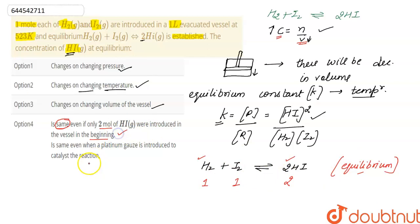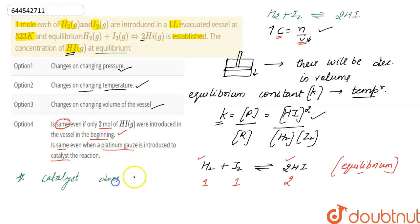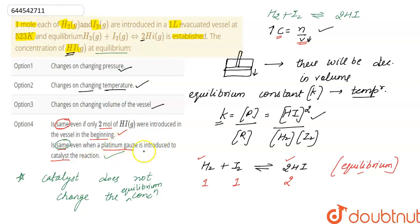Next: is the concentration of HI the same even when a platinum catalyst is introduced to catalyze the reaction? A catalyst does not change the equilibrium concentration. So this statement is also correct. That means all the given options are correct for the given question.